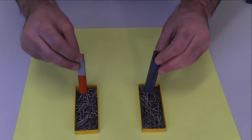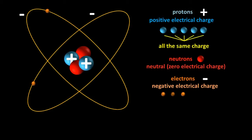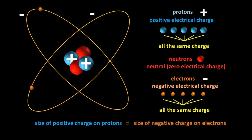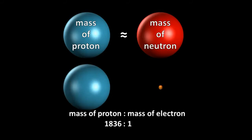Though the strength of magnets can vary, the size of the charge on all protons is exactly the same, and the size of the charge on all electrons is exactly the same. Also, the size of the positive charge on each proton is equal to the size of the negative charge on each electron, despite the fact that protons are much, much bigger than electrons. In fact, protons and neutrons are approximately equal in mass, but they're nearly 2000 times more massive than electrons.